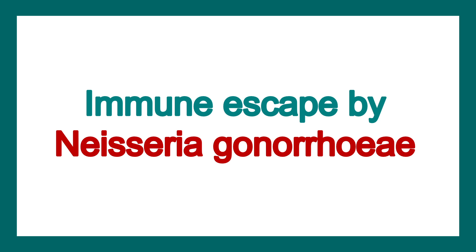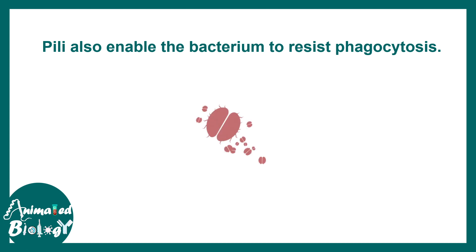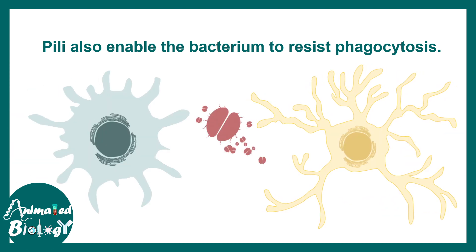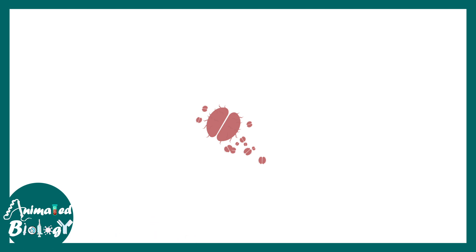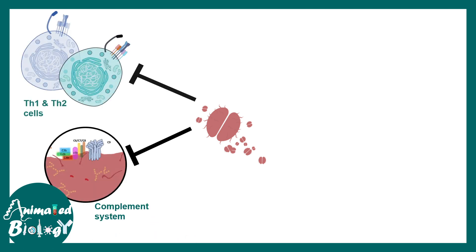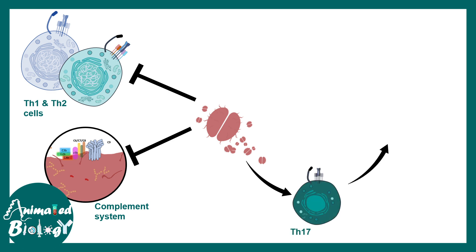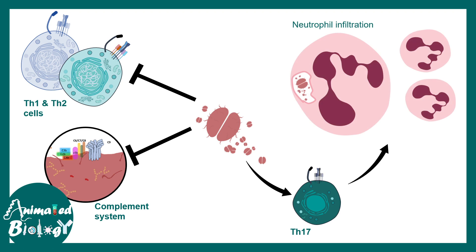Let's see how immune escape happens in the case of N. gonorrhea. N. gonorrhea has Pili which protect them from being phagocytosed by macrophages or dendritic cells. They can also secrete a protein known as IgA protease that can cleave the IgA antibody and save them from the humoral immune response. They can block the complement system, suppress the Th1 and Th2 subpopulation of T-cells, and induce the Th17 subpopulation, which triggers inflammation and neutrophil mobilization. Neutrophils are themselves heavily infested by N. gonorrhea, ultimately leading to burst and death of these neutrophils, which alleviates the overall infection.